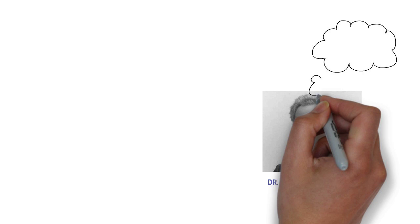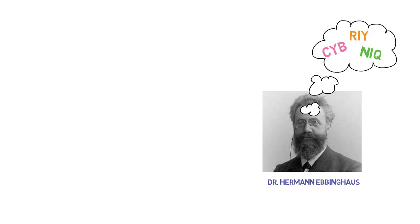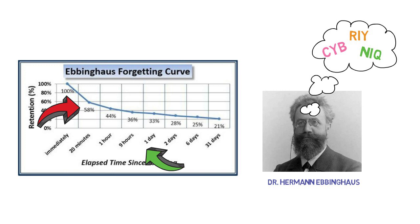Back in 1885, Dr. Herman Ebbinghaus, a psychologist, tested his own powers of memorization by creating a bunch of nonsense words and then testing to see how many he could remember over a set period of time. After just 20 minutes, he'd already forgotten nearly half the words. By the next day, he only remembered a third of them, and a week later, he could only remember 25% of those new words.